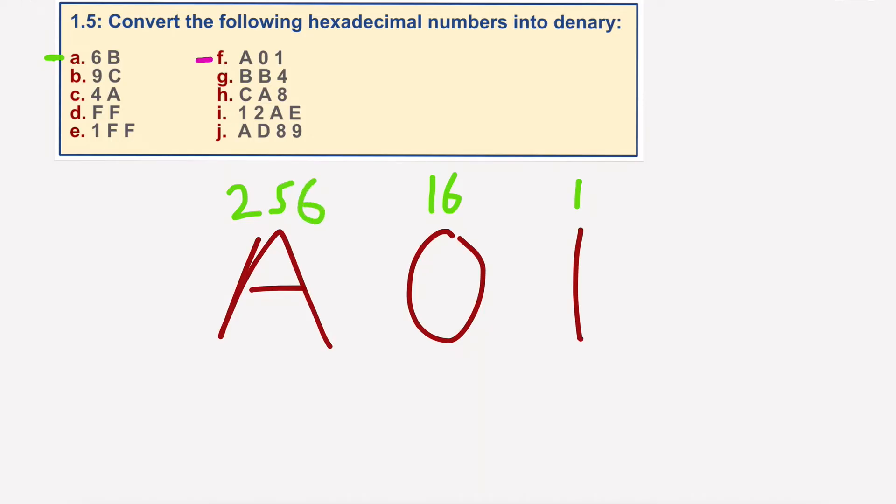We have, first of all, A equals 10. So 10 times 256. We've got 0 times 16, plus 1 times 1. So 10 times 256 would equal 2,560, plus no lots of 16, plus the 1. And that would give us a grand total of 2,561.